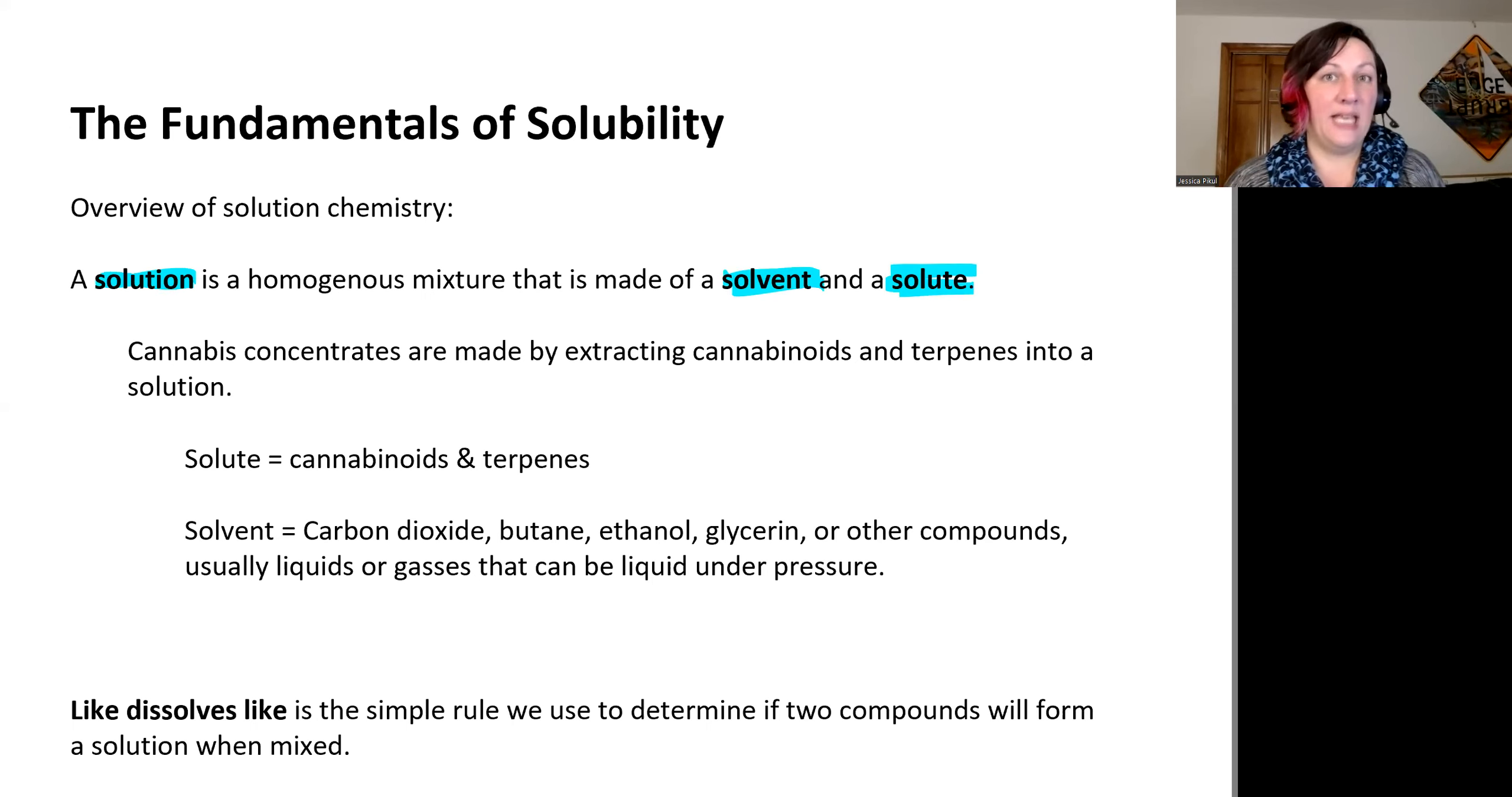When we think about cannabis concentrates and the process of extracting them from plant material, we could think of the solute as the cannabinoids and terpenes present in the plant material. We may have some other solutes join those in the extraction process, like proteins or parts of the cell like chlorophyll, which gives it green color, fats and waxes, and some sugars.